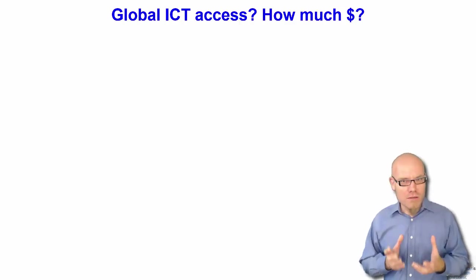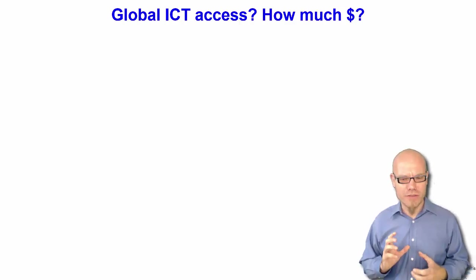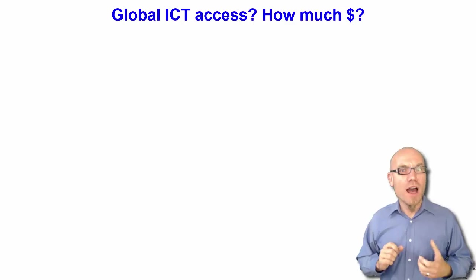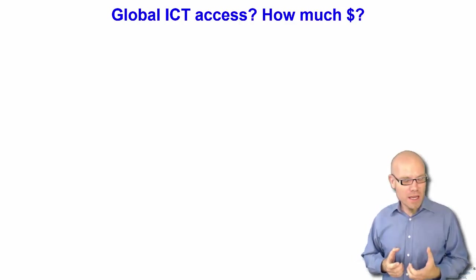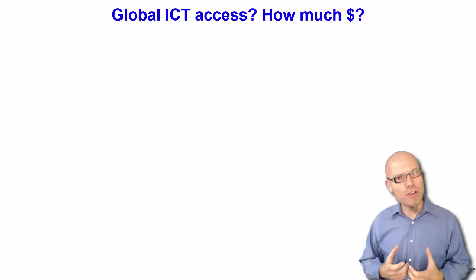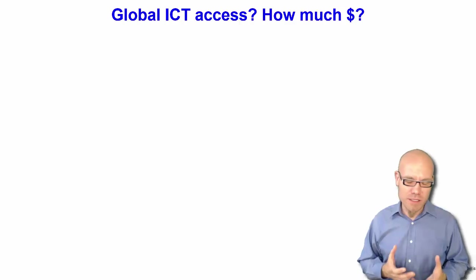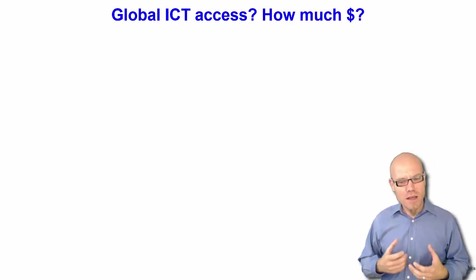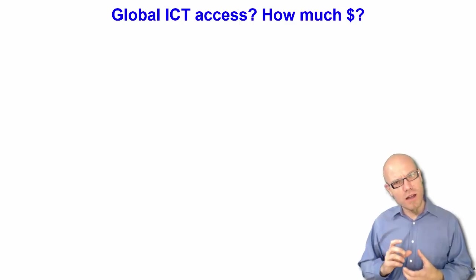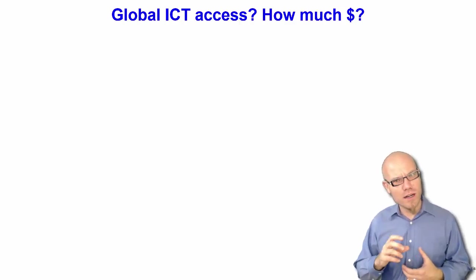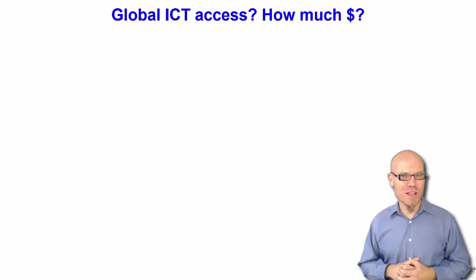We can go very systematically about it. We have to answer two questions. First of all, we have to have a general feeling about how much people earn in this world. And second of all, we have to know the percentage that on average people spend on ICT — they also have to eat and pay rent. Then we can know: is a hundred dollars too much or too little to provide access for everybody? So let's go about these two questions.